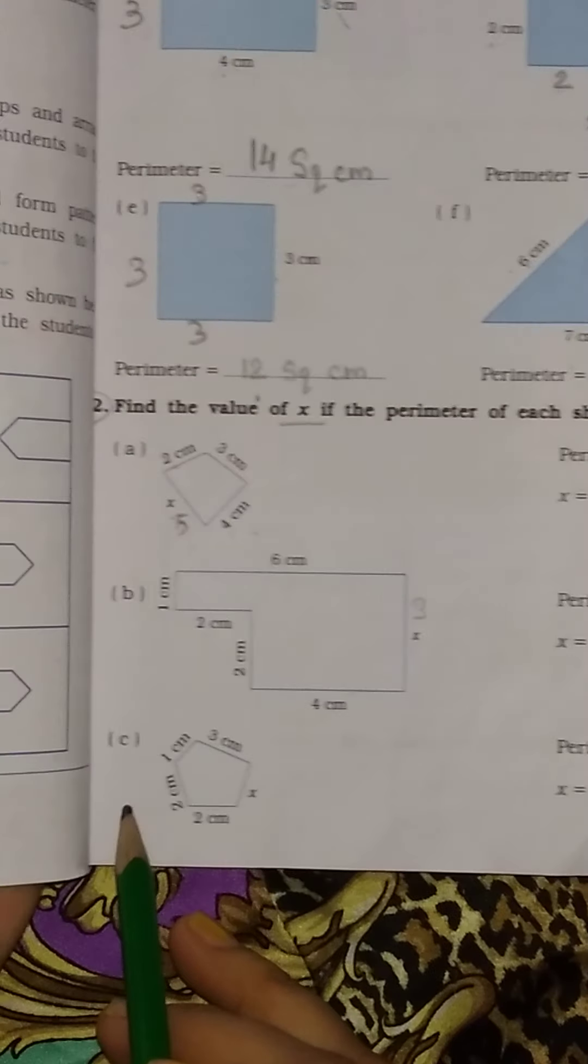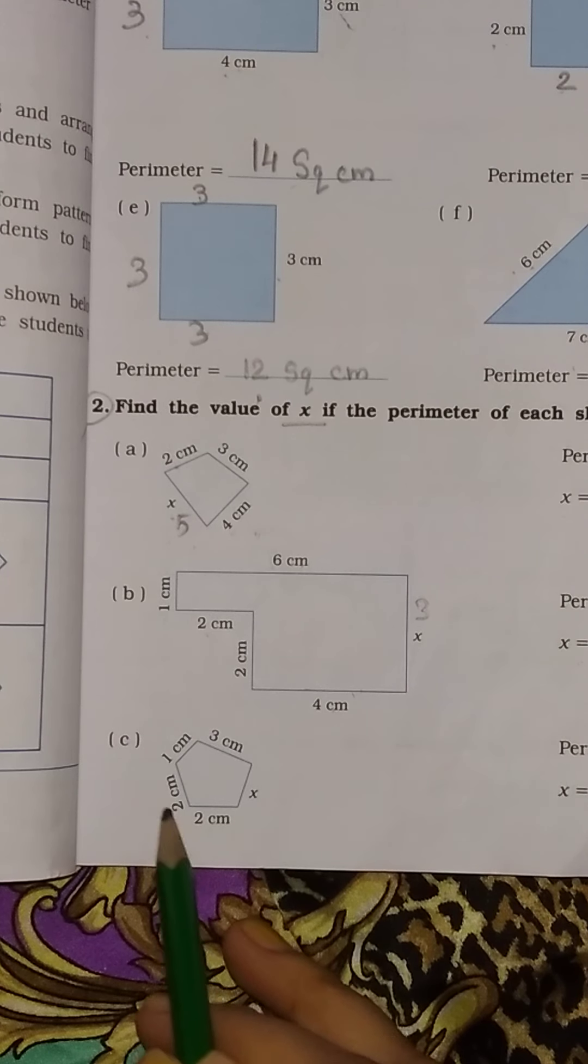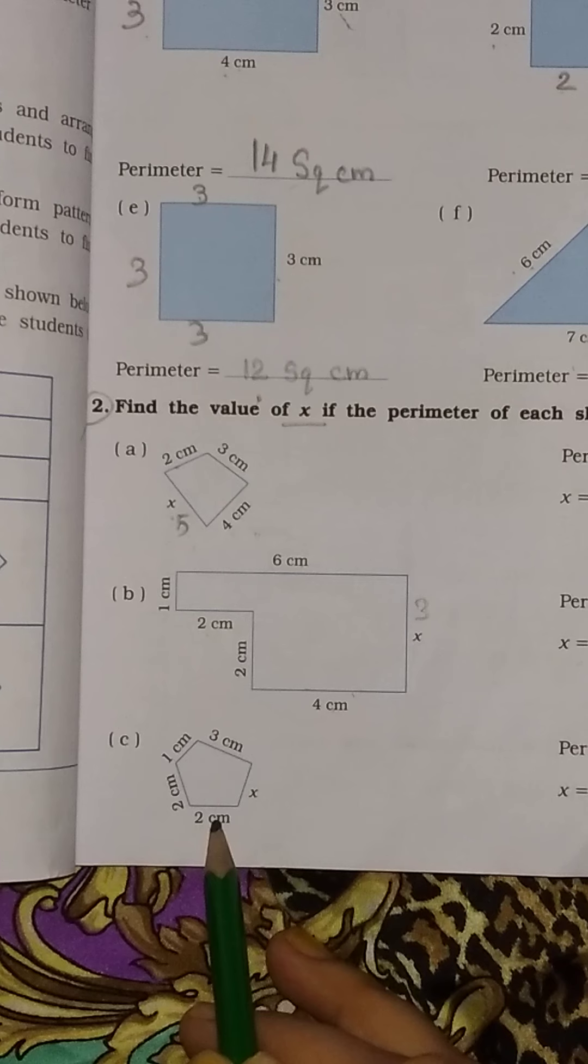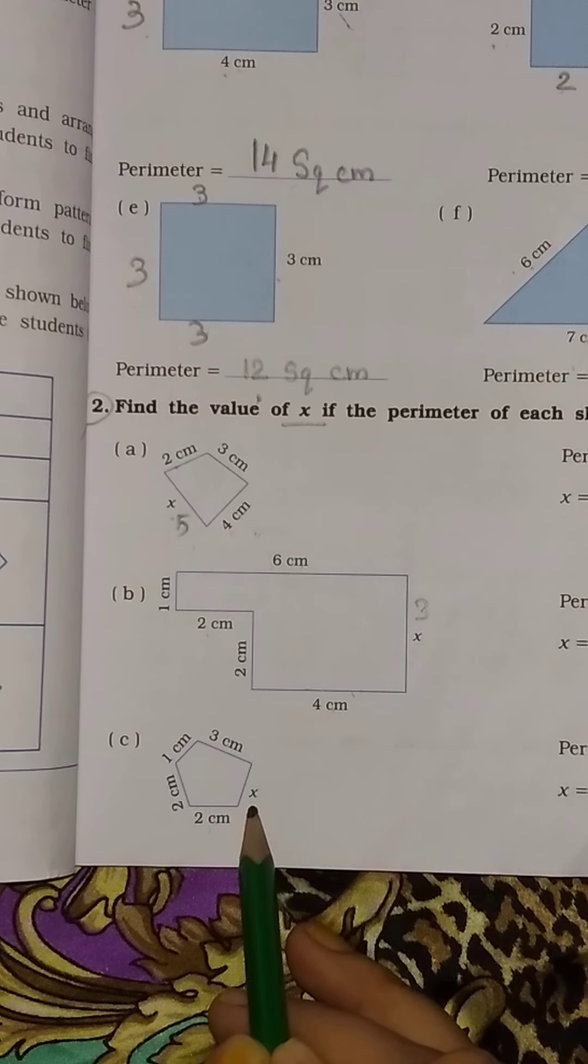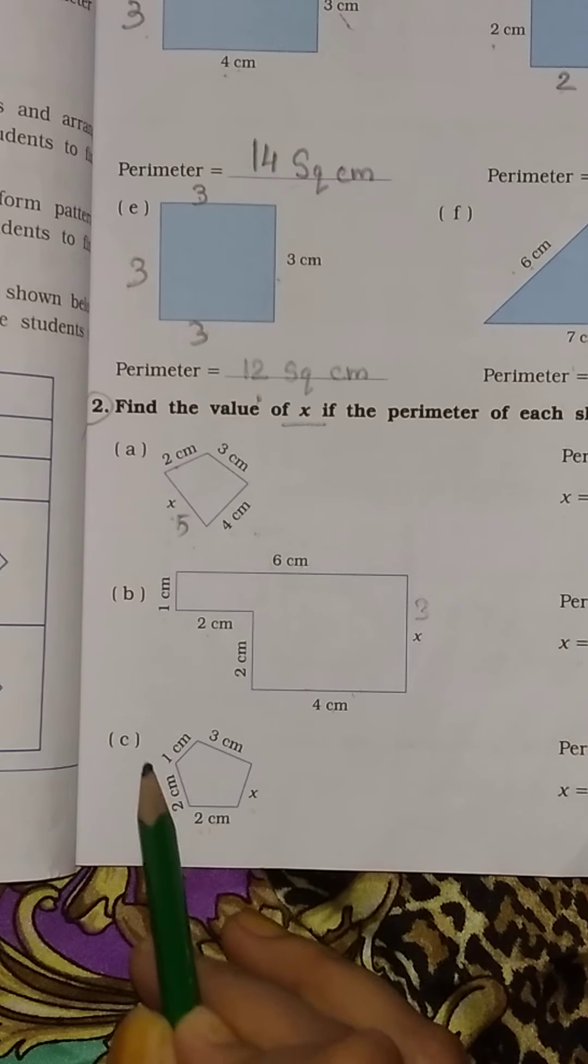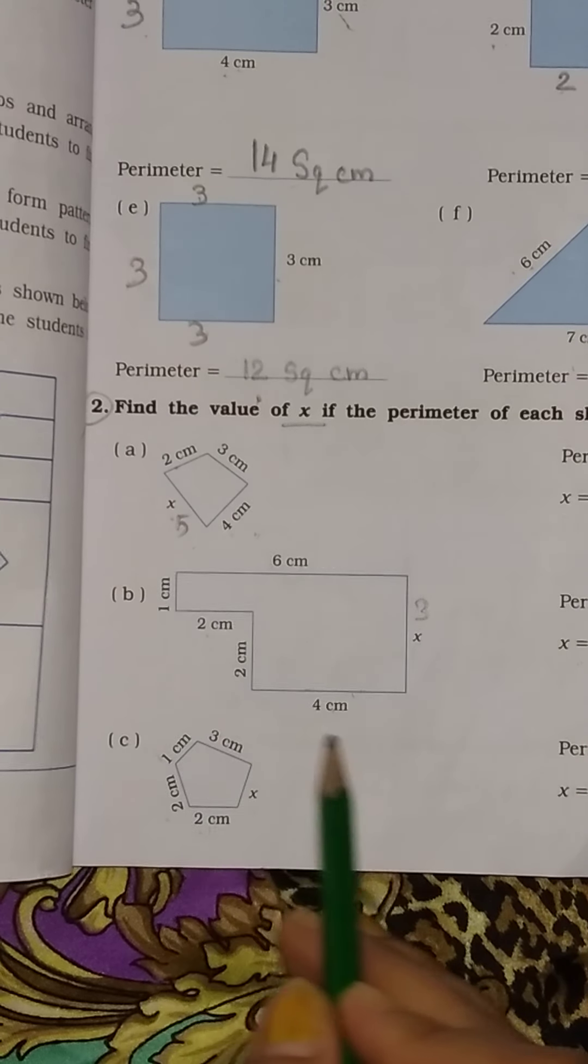Now see the third one. 2 cm, 2 cm, 1 cm, 3 cm. Let's add these and find the x value. 2 plus 2 is 4, plus 1 is 5, plus 3 is 8.